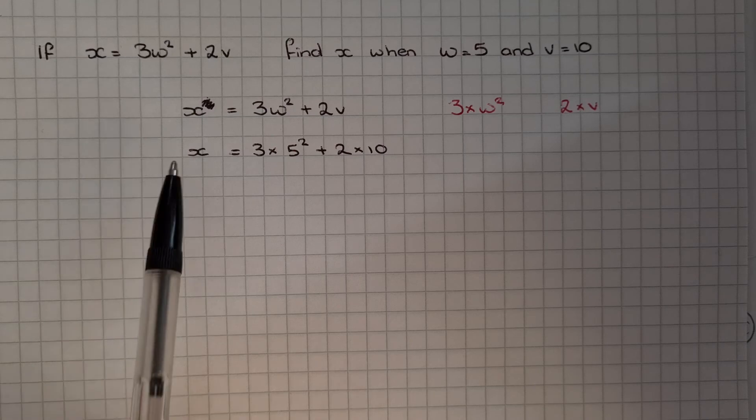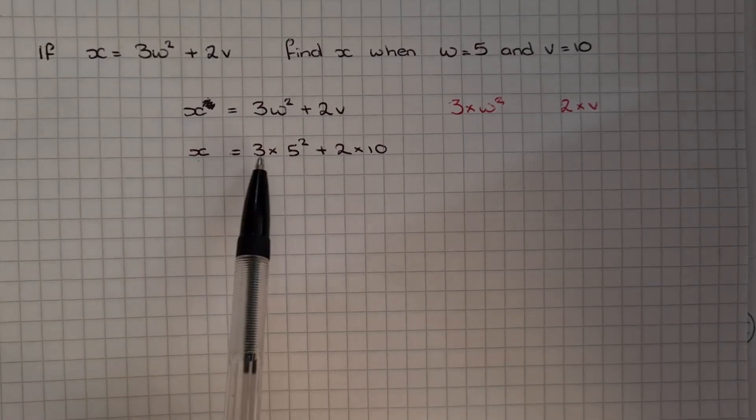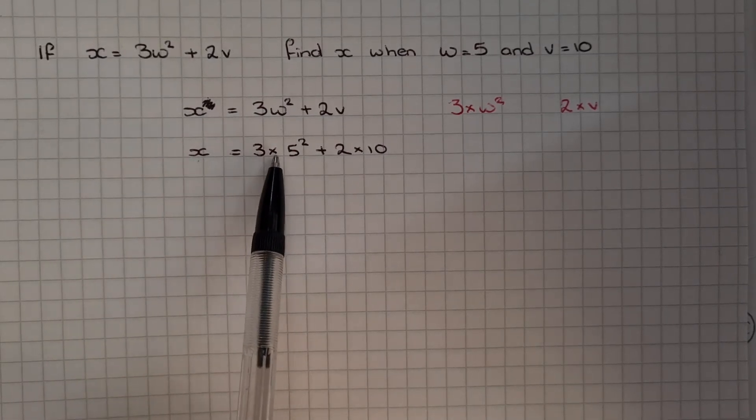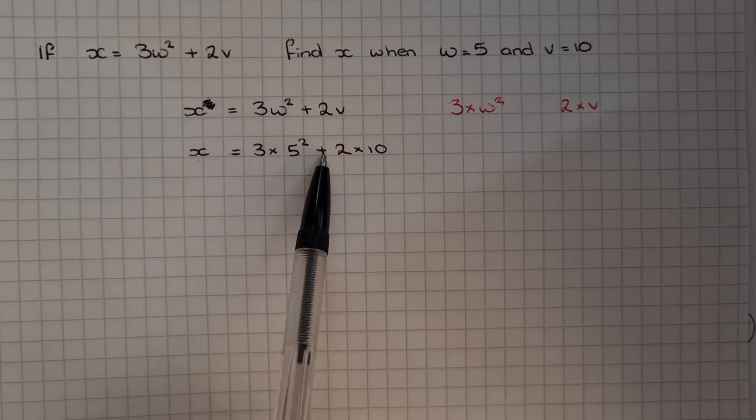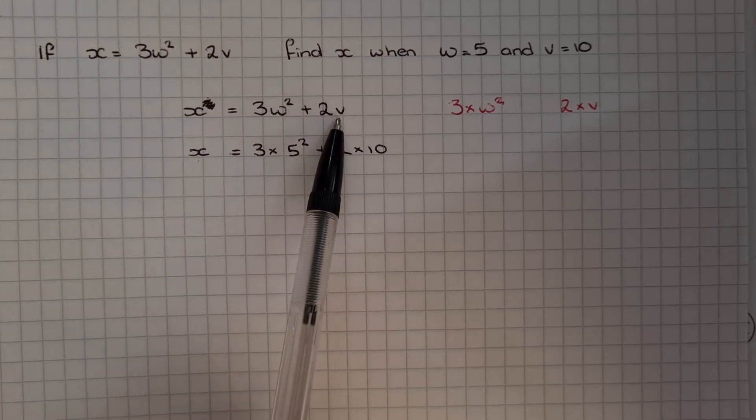On the next line, we're keeping X on the left hand side. And on the right hand side, we've got 3 times 5 squared plus 2 times 10 instead of 2 times V.